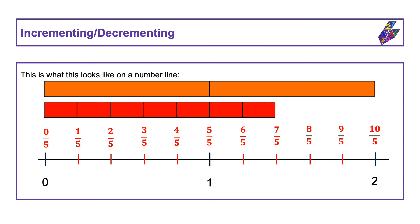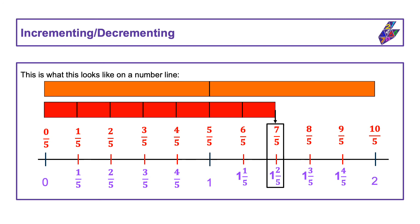We can also label the number line incrementing in units of one-fifths but using mixed numbers when the fraction is greater than one: zero, one-fifth, two-fifths, three-fifths, four-fifths, one, one and one-fifth, one and two-fifths, one and three-fifths, one and four-fifths, two. We can see that seven-fifths and one and two-fifths represent the same number and therefore have the same position on the number line.